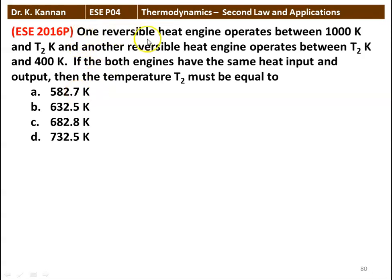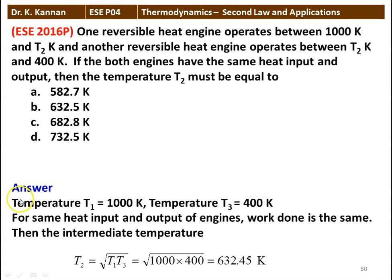Next question: one reversible heat engine operates between 1000 Kelvin and T2 Kelvin, and another reversible heat engine operates between T2 Kelvin and 400 Kelvin. If both engines have the same heat input and output, then the temperature T2 must be equal to: 582.7 K, 632.5 K, 682.8 K, or 732.5 K. The answer: T1 = 1000 K, T3 = 400 K. For the same work output, T2 = √(T1 × T3) = √(1000 × 400) = 632.45 K. The answer is 632.5 Kelvin.